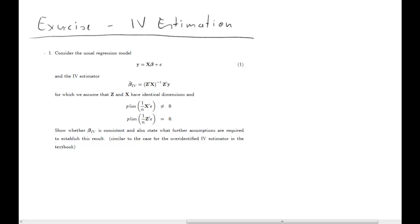This clip provides the answers to the exercise questions for the IV estimation exercise class. Here is the first question: we have a very standard regression model with y as the dependent variable, x as the explanatory variable, and a matrix of instruments z. They have identical dimensions, so we are working in the exactly identified case, and you can see the equation for the IV estimator in this case.